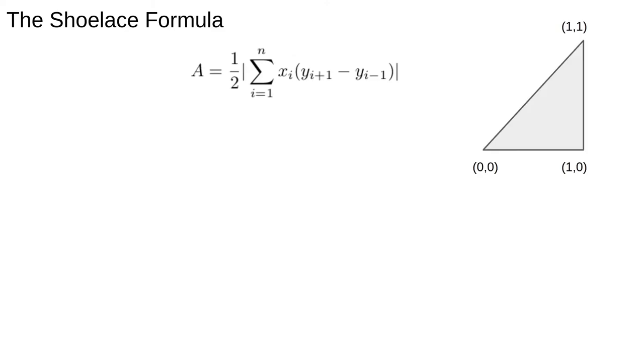To see why it's called the shoelace formula, consider a triangle with vertices (0,0), (1,0) and (1,1). The formula above can be evaluated by writing the x and y coordinates as columns of a vector, repeating the first coordinate at the end to close the polygon.